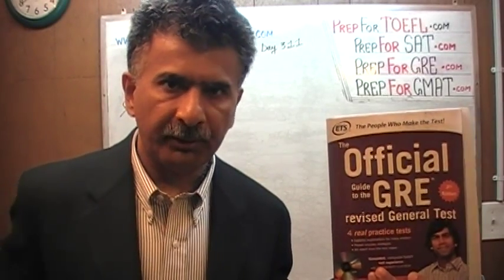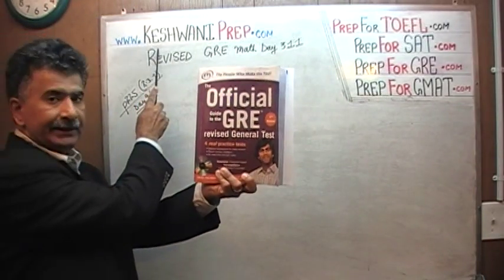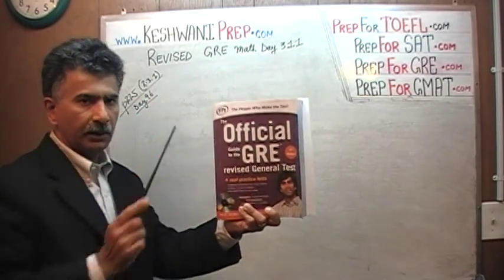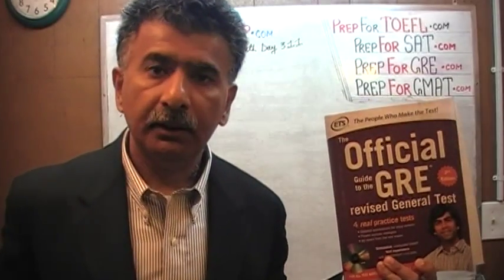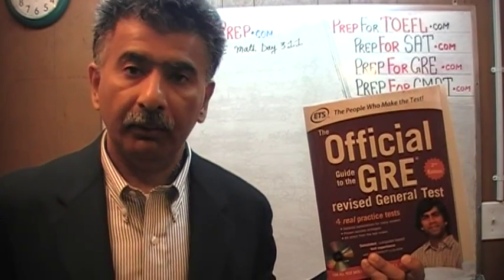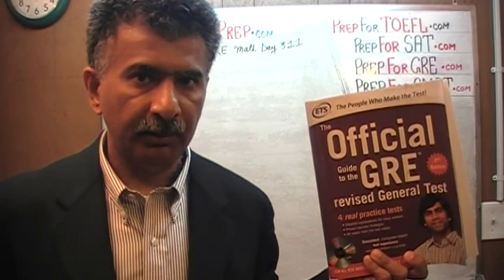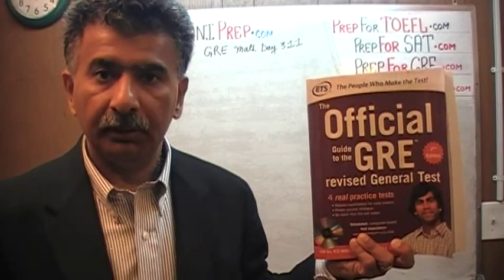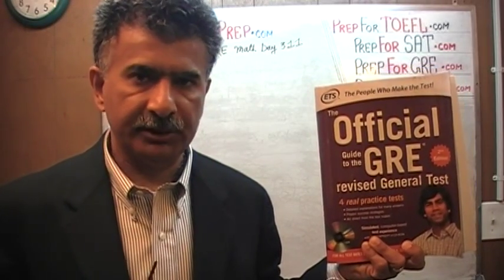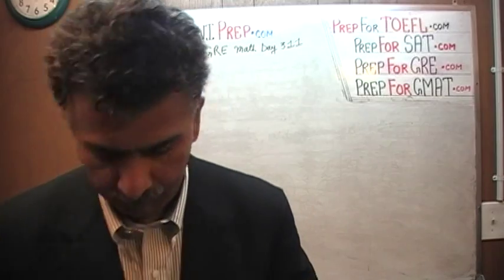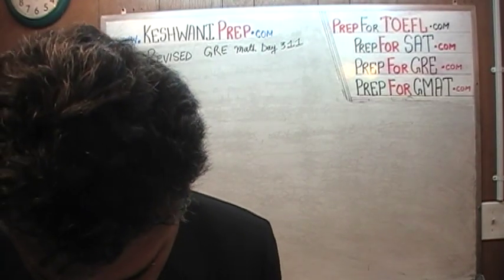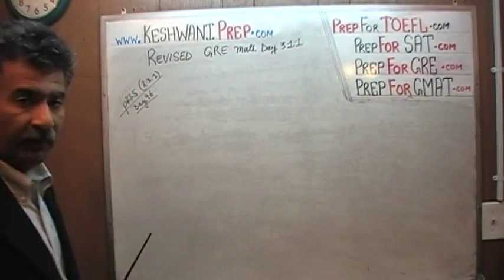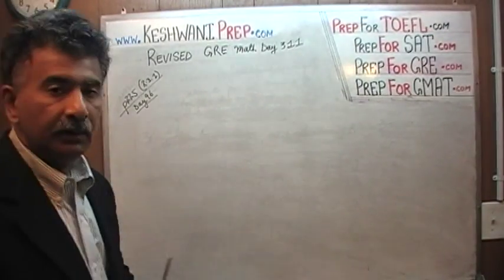Hello, my name is Keshwani, S-K-E-S-H-W-A-N-I. We are here because we want to prepare for GRE. We have been solving GRE math problems out of this book, the official guide to the revised GRE, the second edition. If you do not own this book already, purchase one immediately, you are going to need it. The problem we are about to solve is on page number 225. Please turn to it — page 225 — and today is our lesson number 311.